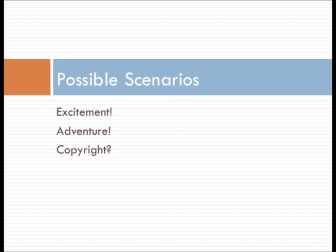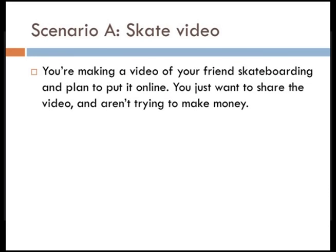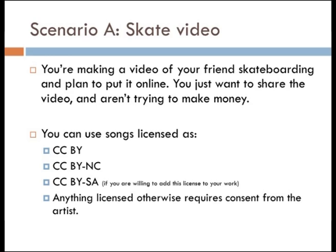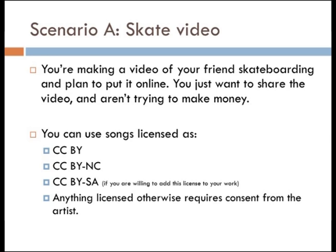Possible scenarios: the skate video. You're making a video of your friend's skateboarding and plan to put it online — you just want to share the video and aren't trying to make money. If you're not trying to make money, you could probably use a non-commercial license. The most openly licensed option is an attribution license, which is just CC BY. Anything licensed otherwise requires consent from the artist. Where it can sometimes get confusing is if you're using one piece of music that's CC BY-SA, then things can start to get complicated.